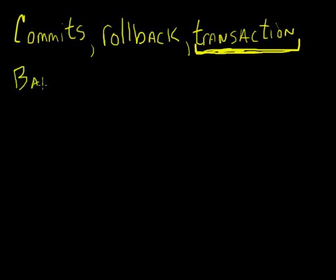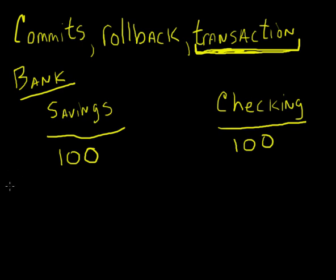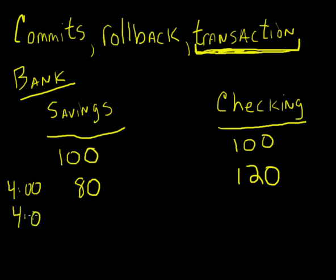The example that virtually every book in the world uses is a bank example. Let's say I have a couple of different bank accounts - a savings account and a checking account, and each one of them has a hundred bucks in it. I go to the ATM and do a couple of transactions. At 4 o'clock I move $20 from savings to checking, so my savings goes down to $80 and my checking goes to $120.